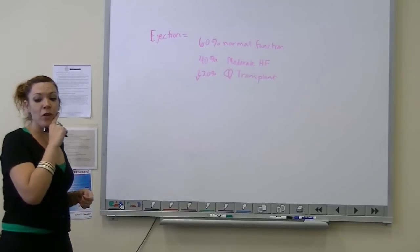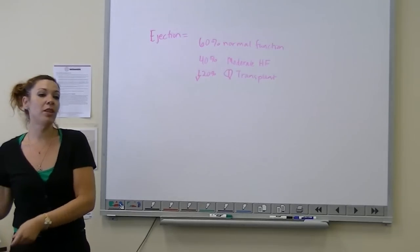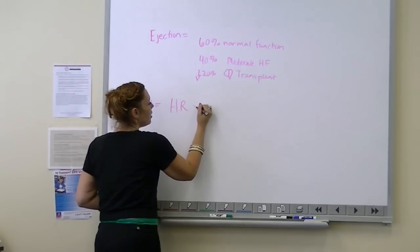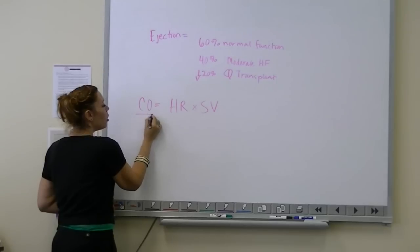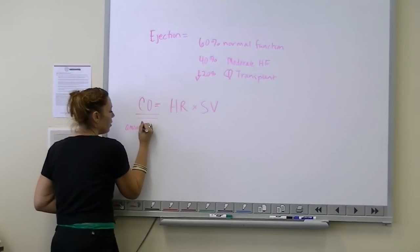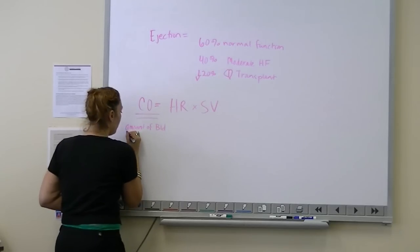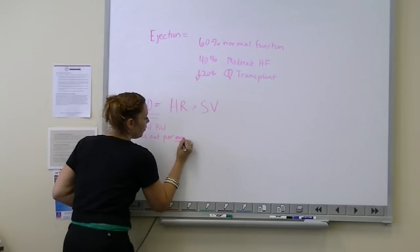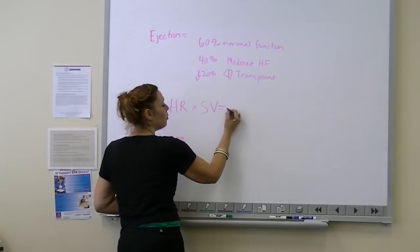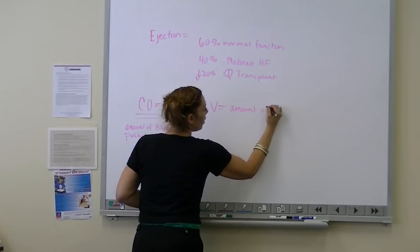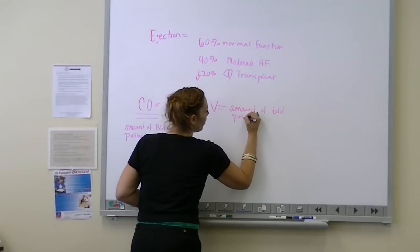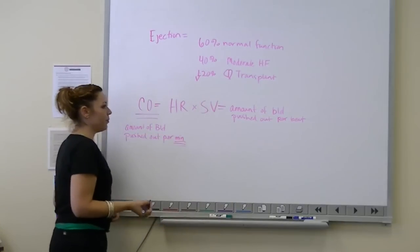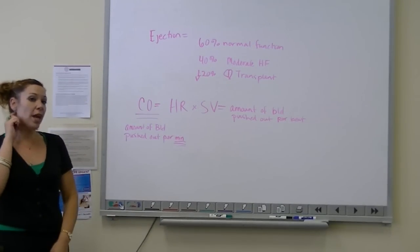Now we're going to have to go over cardiac output and stroke volume. Good thing it's there together. Cardiac output is the product of heart rate times stroke volume. Cardiac output is the amount of blood pushed out per minute. Minute is my trigger word. Where stroke volume is the amount of blood pushed out per beat, times whatever the heart rate is, and that's what my cardiac output should be.